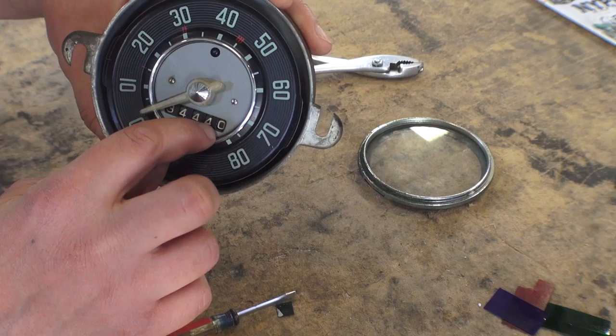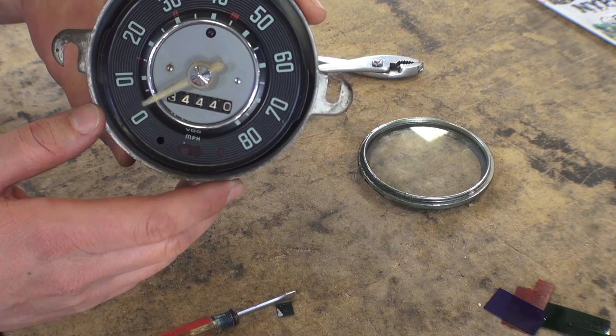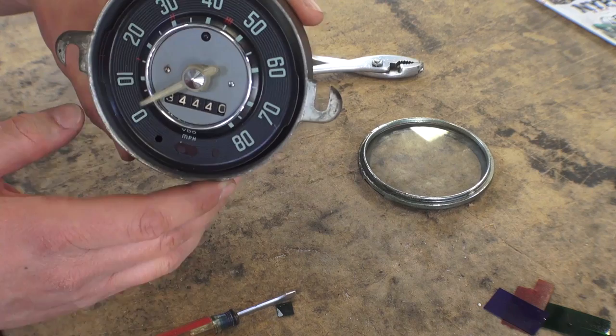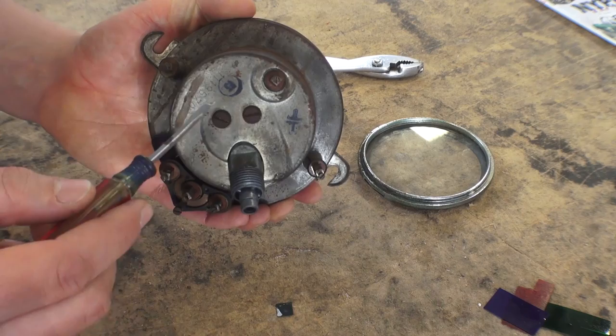A lot of times the white is off or faded away. I've seen guys get in there and repaint the numbers with a toothpick or a very fine brush. You've got to have some skill to do that. For the most part these numbers look okay, so let's take this off.